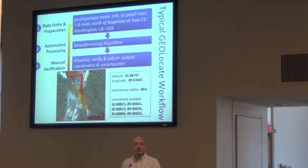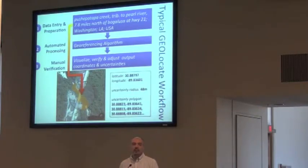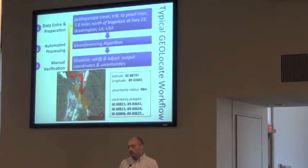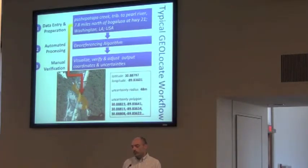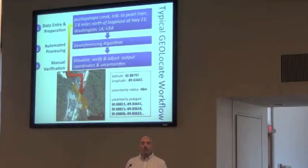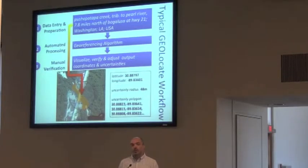A typical workflow using Geolocate first starts off with the data entry phase. That could be as simple as uploading data, but usually that's where you're doing a lot of cleanup — making sure your county names are all standardized, your state, your country — so that you'll get the best results out of georeferencing and minimizing the amount of work you have to do. Then you load it into Geolocate, and that's where the automated phase goes, where Geolocate parses your data, does all kinds of calculations, and creates a bunch of results trying to figure out where that locality could be.